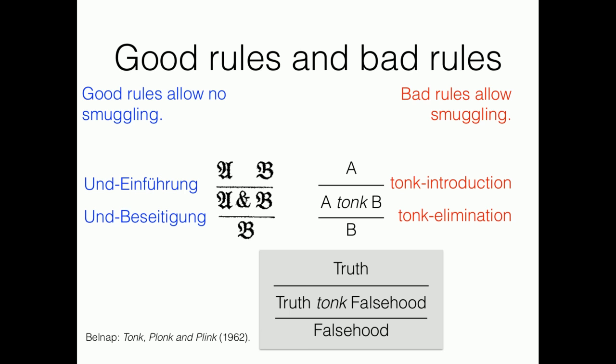But on the right-hand side there are bad rules. It's called tonk. Tonk introduction is the same as or introduction. When you have a proof of A, you can have a proof of A tonk B. And tonk elimination is the same as and elimination. When you have A tonk B, you can get a proof of B. These rules allow you to smuggle new propositions into your proofs and you can prove false from truth or something like that. It's all about the harmony of introduction and elimination.